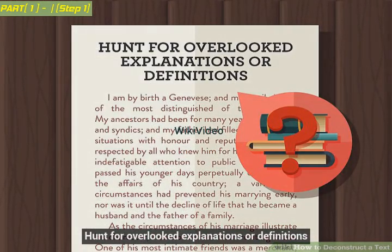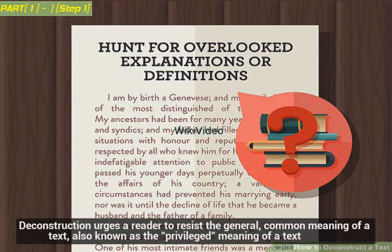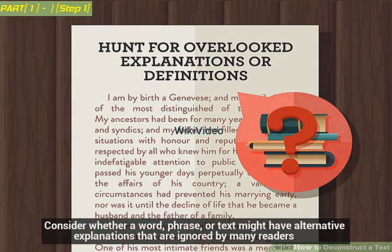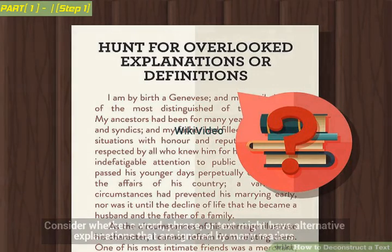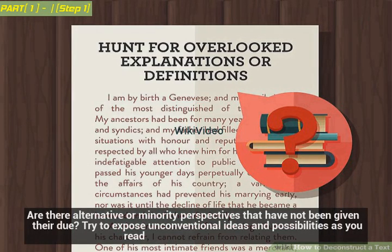Hunt for overlooked explanations or definitions. Deconstruction urges a reader to resist the general, common meaning of a text — also known as the 'privileged' meaning of a text. Consider whether a word, phrase, or text might have alternative explanations that are ignored by many readers. Are there alternative or minority perspectives that have not been given their due? Try to expose unconventional ideas and possibilities as you read.